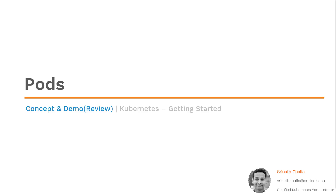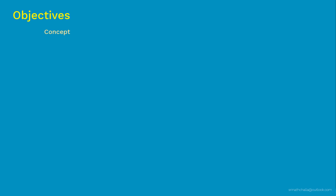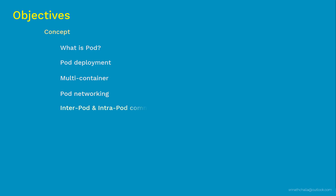So without any further delay, let's take a look at the things you will be learning as part of this video. We'll primarily focus on discussing the concepts around pods. First we'll start with what is a pod, then we'll discuss how pods are deployed in Kubernetes. After that we'll see in what instances we use multiple containers in a single pod, then we'll look at how pod networking works, and after that we'll discuss inter-pod networking and intra-pod networking. Then we'll look at the various stages of the pod life cycle, and finally we'll look at how to write a pod manifest file.